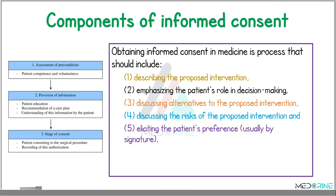This process follows a given order whereby, at first, you need to assess the preconditions — the patient's competence and the voluntariness to undergo the procedure. Then you provide the information by educating the patient on the procedure they are going to undertake, the recommendations of a care plan, and the patient's understanding of this information. From there, we state the consent, whereby the patient consents for the procedure and records this authorization using a signature and their full legal names.